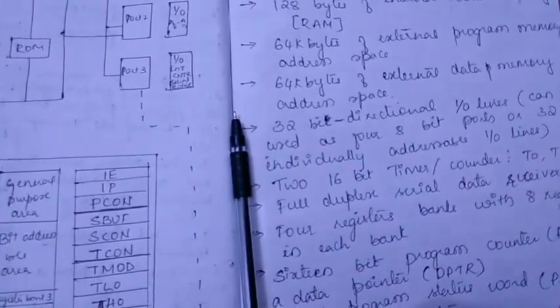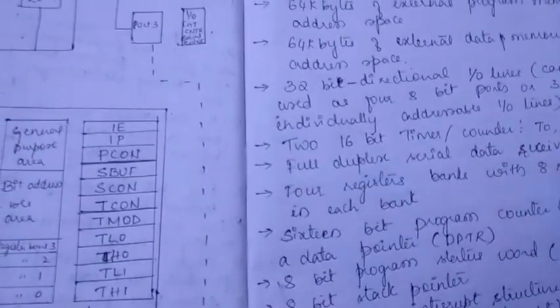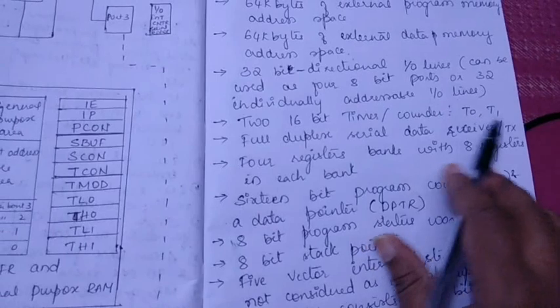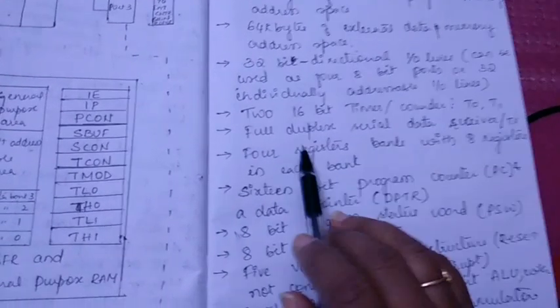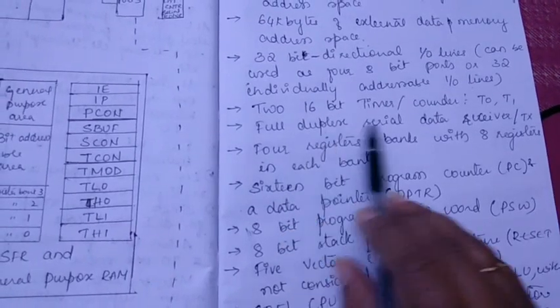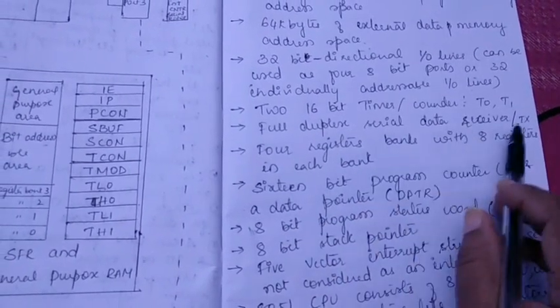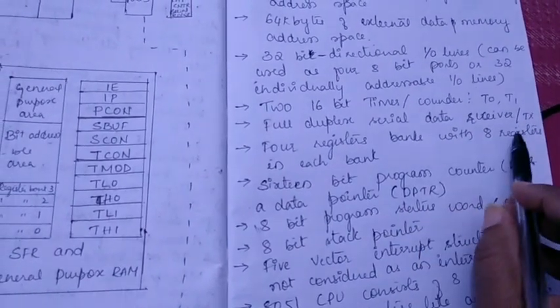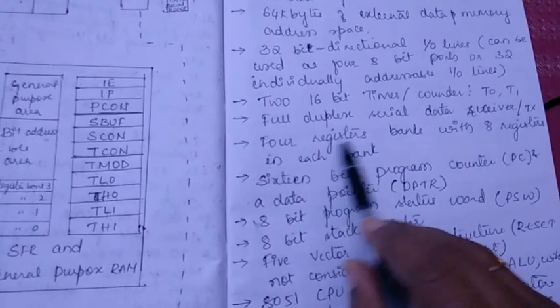Next we have two 16-bit timer counters. 8051 has two 16-bit timer counters which is T0 and T1. Next, the microcontroller has full duplex serial data receiver and transmitter, and it has four register banks.